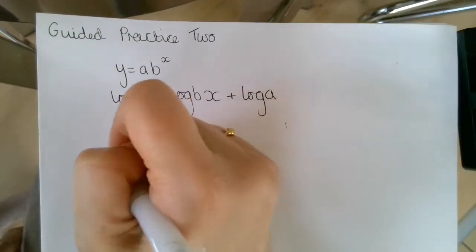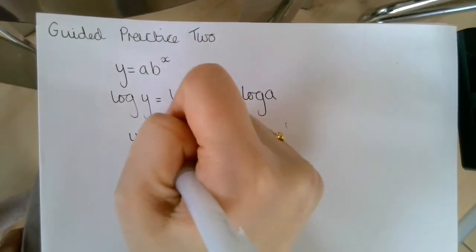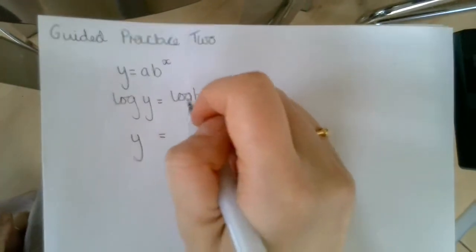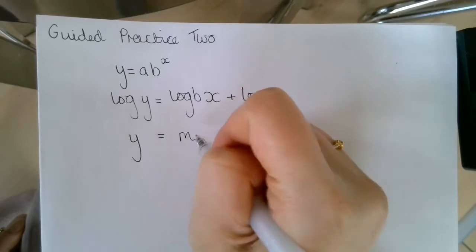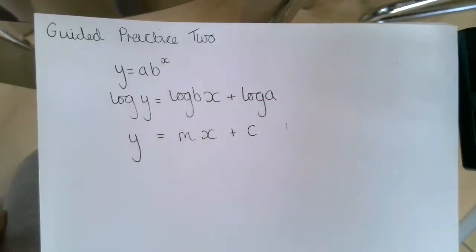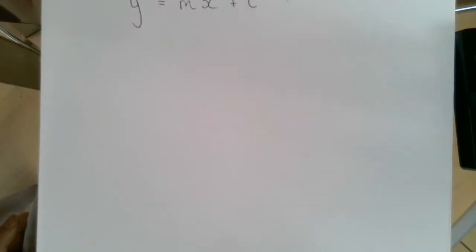So log y replaces the y value in y equals mx plus c, log b replaces that m value, and log a replaces that c value. So in the question that was on the previous slide you've just seen, it says the graph represents the growth of a population of bacteria p over t hours.